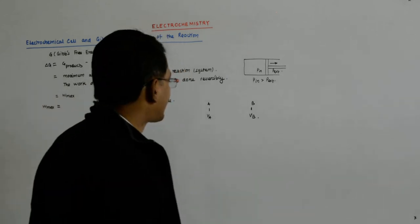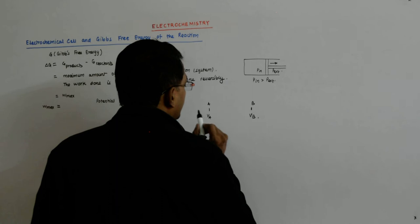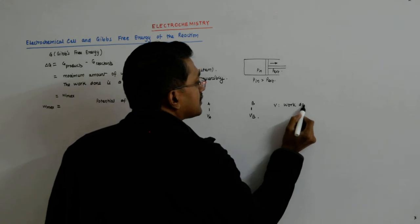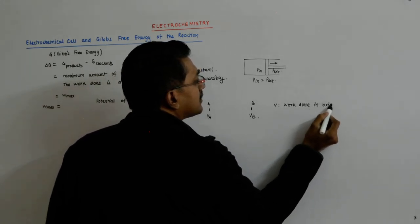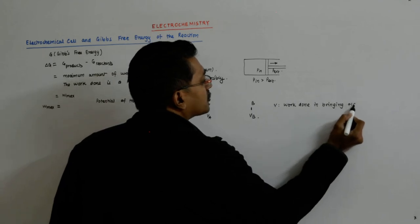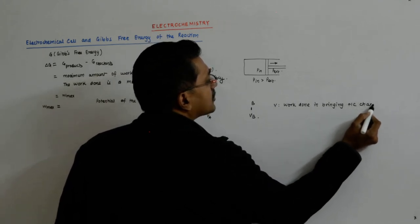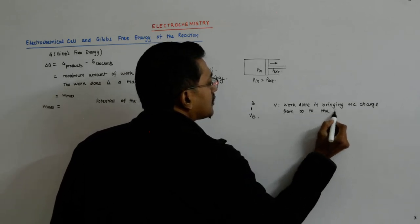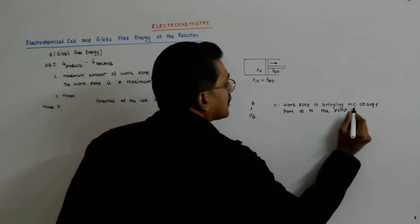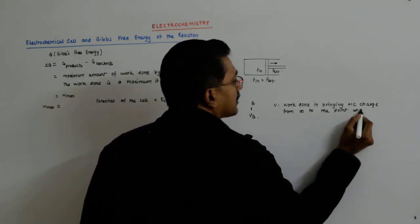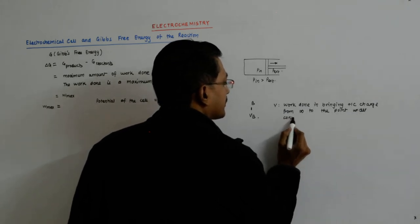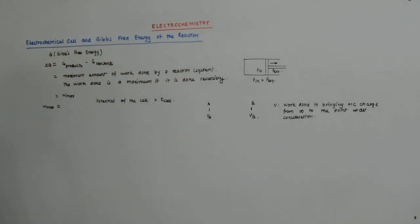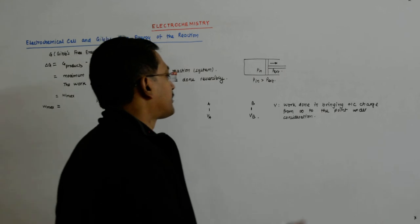If you go back and study the electricity of class 12, you will understand that potential V is the work done in bringing a plus one coulomb charge from infinity to the point under consideration. Whatever point you want the potential to be known at, you have to bring the charge from infinity to that point.